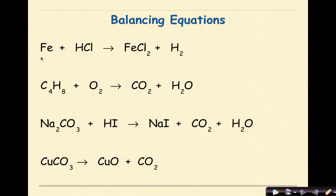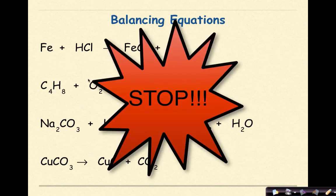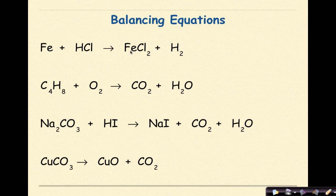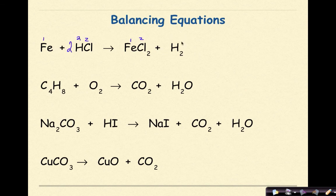Fe plus HCl yields FeCl2 plus H2. I have 1 Fe, 1 Fe — that's balanced. I'll leave the H's to the end. I have 1 Cl vs. 2 Cls, so I put a 2 in front of HCl — 2 Cls, 2 Cls, that's balanced. That leaves the hydrogens: 2 H's on the reactant side and 2 H's on the product side. All good, all balanced.